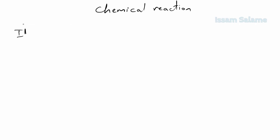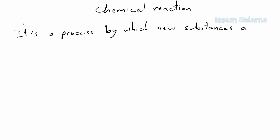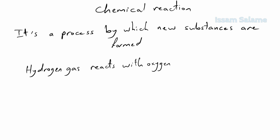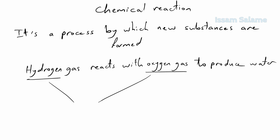A chemical reaction is a process by which new substances are formed. For example, hydrogen gas reacts with oxygen gas to produce water. Hydrogen gas and oxygen gas are called reactants, while water is the product. As we can see, water is a totally new substance with new properties.